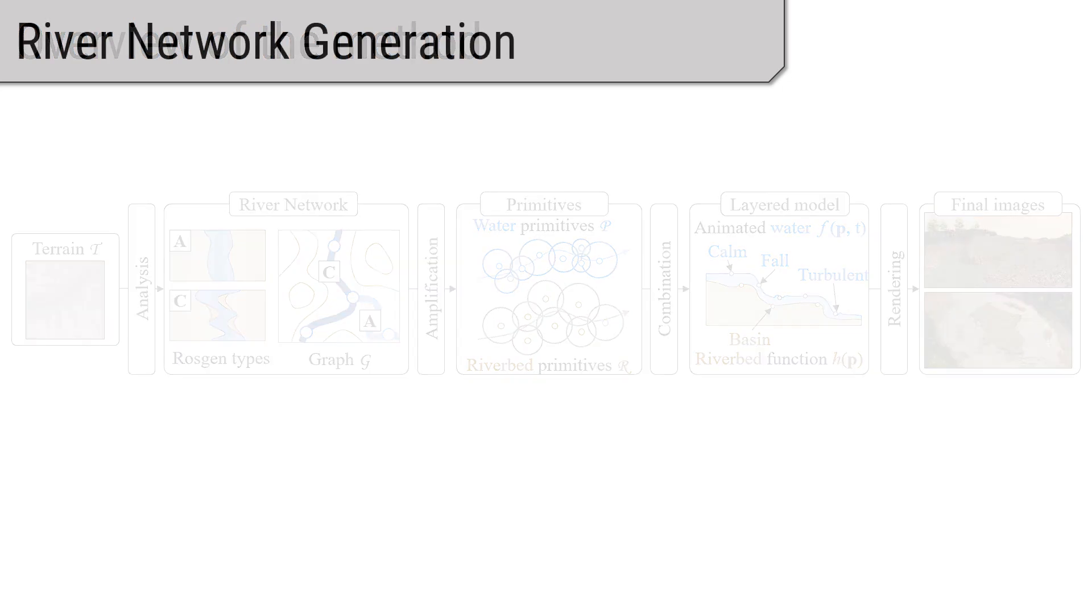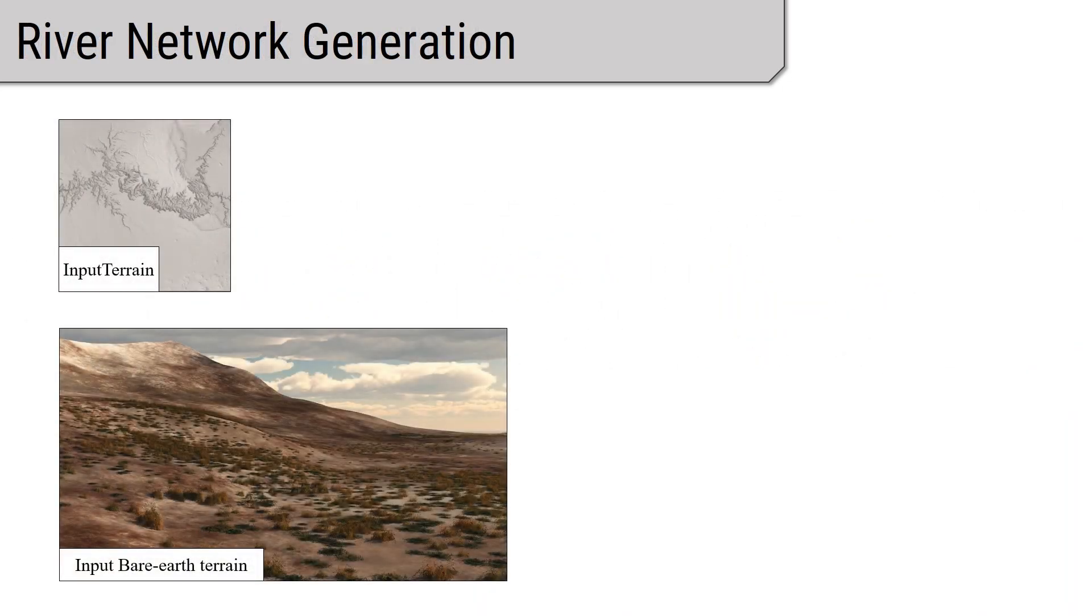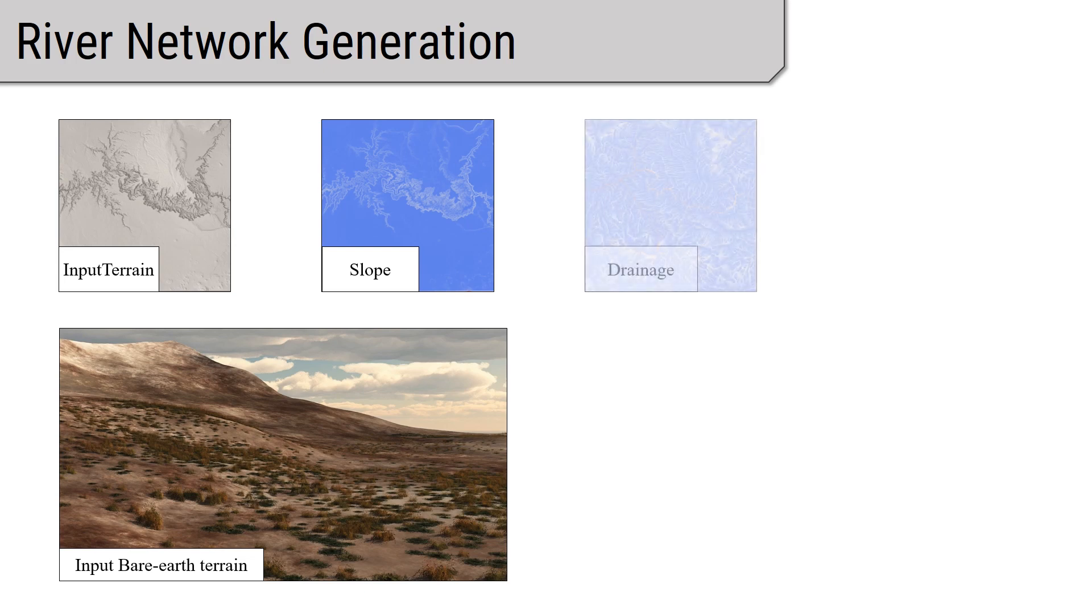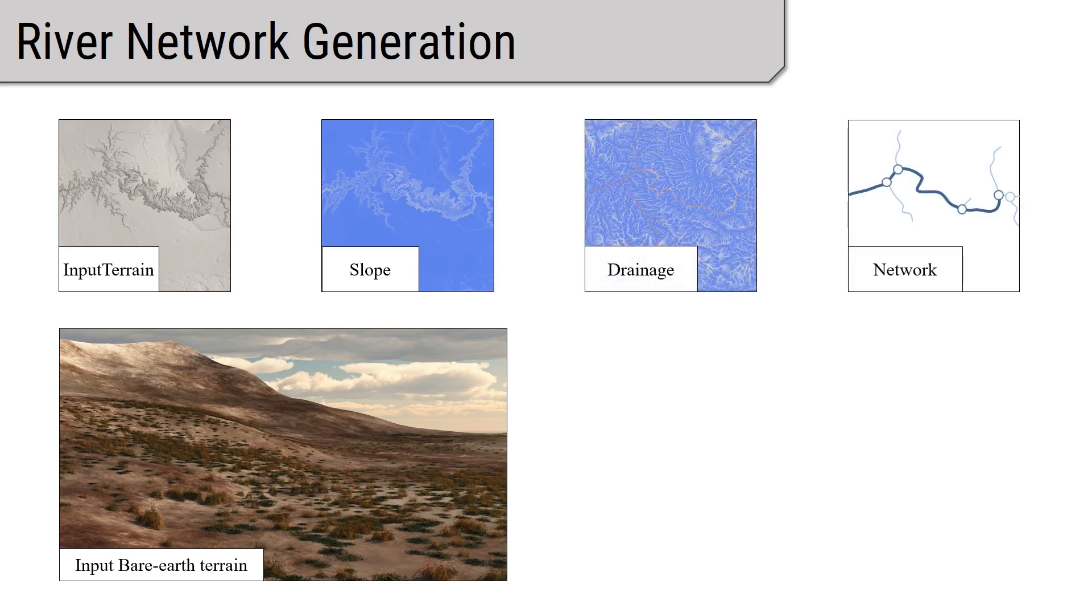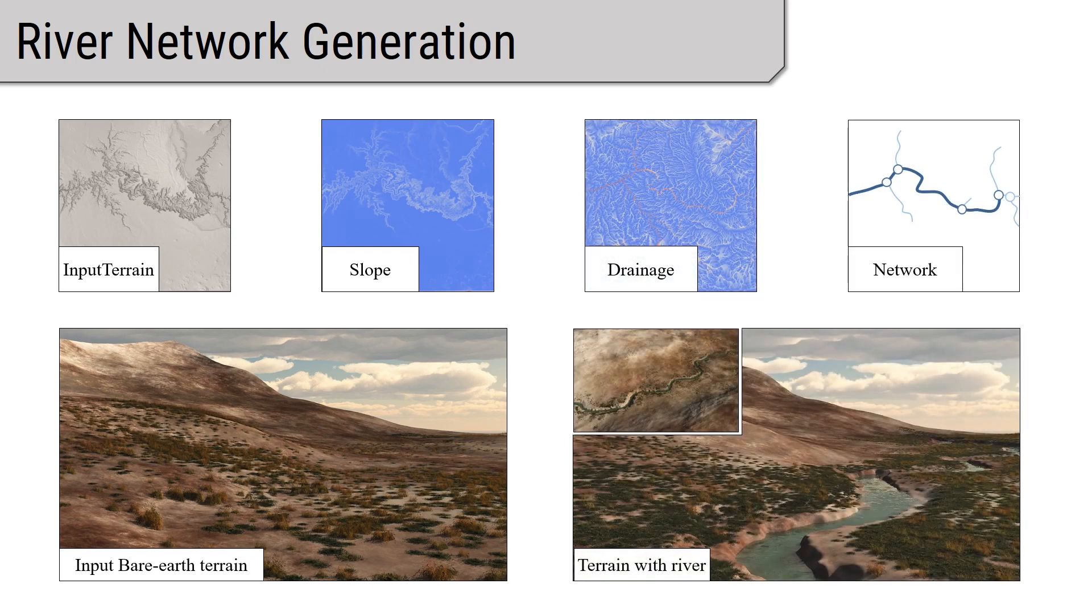Our standard pipeline takes an input terrain with no additional information and generates an entire riverscape. Depending on the automatically computed river attributes, we carve the riverbed with the corresponding profile attributes.